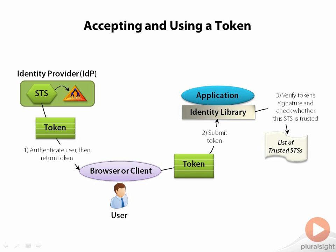If it's done that, it can then use those claims any way it likes. A very common way to use those claims is to make an access control decision — to decide what kind of data this user is able to access.